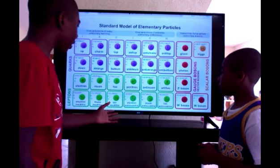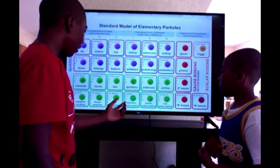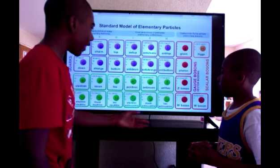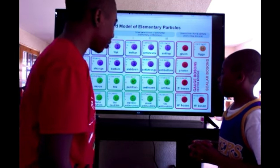You go into the anti leptons which is positron, electron anti neutrino, anti muon, muon anti neutrino, anti tau, and tau anti neutrino.